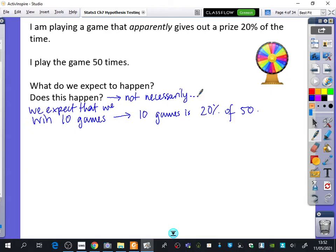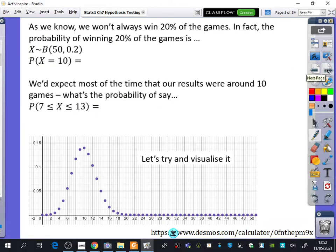Because we're going to try and explore what might happen if we were playing a game. So we expect to win 10 games because 10 is 20% of 50. And now we're going to try and think, what happens when we observe some data? That's what I said on that first page. What happens when we observe some data? So I've said, as we know, we won't always win 20% of the games. In fact, the probability of winning 20% of the games is, well, here we've got X is binomially distributed. We're playing the game 50 times with a probability of 0.2. And I want to work out the probability that X is equal to 10. So using your calculators on the PD section, I want you to tell me, what is the probability that X is equal to 10, to four decimal places?